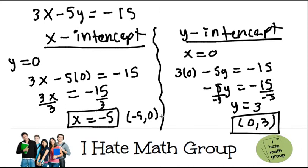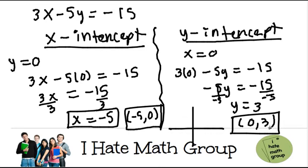Voila! The beauty of the intercepts is that they're really easy. These points are very easy to graph. So if you want to graph your function, you just do 0, 3 — go 1, 2, 3 — and negative 5, 0, which should be like around here. And voila!